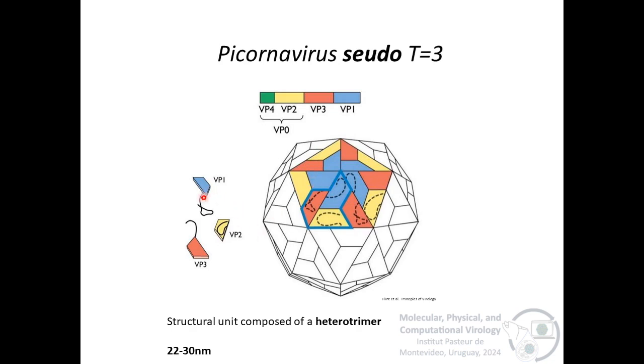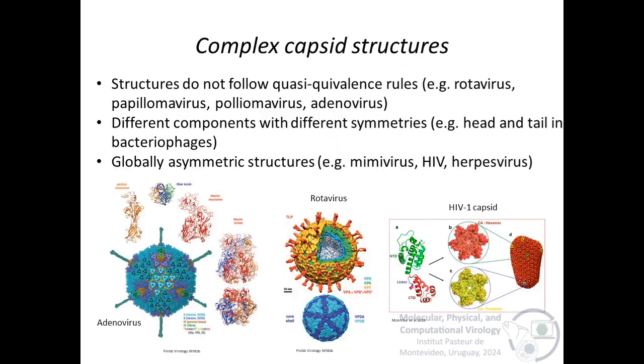Since the 3 subunits are morphologically very similar but not identical, the structure is thus a pseudo T equals 3.